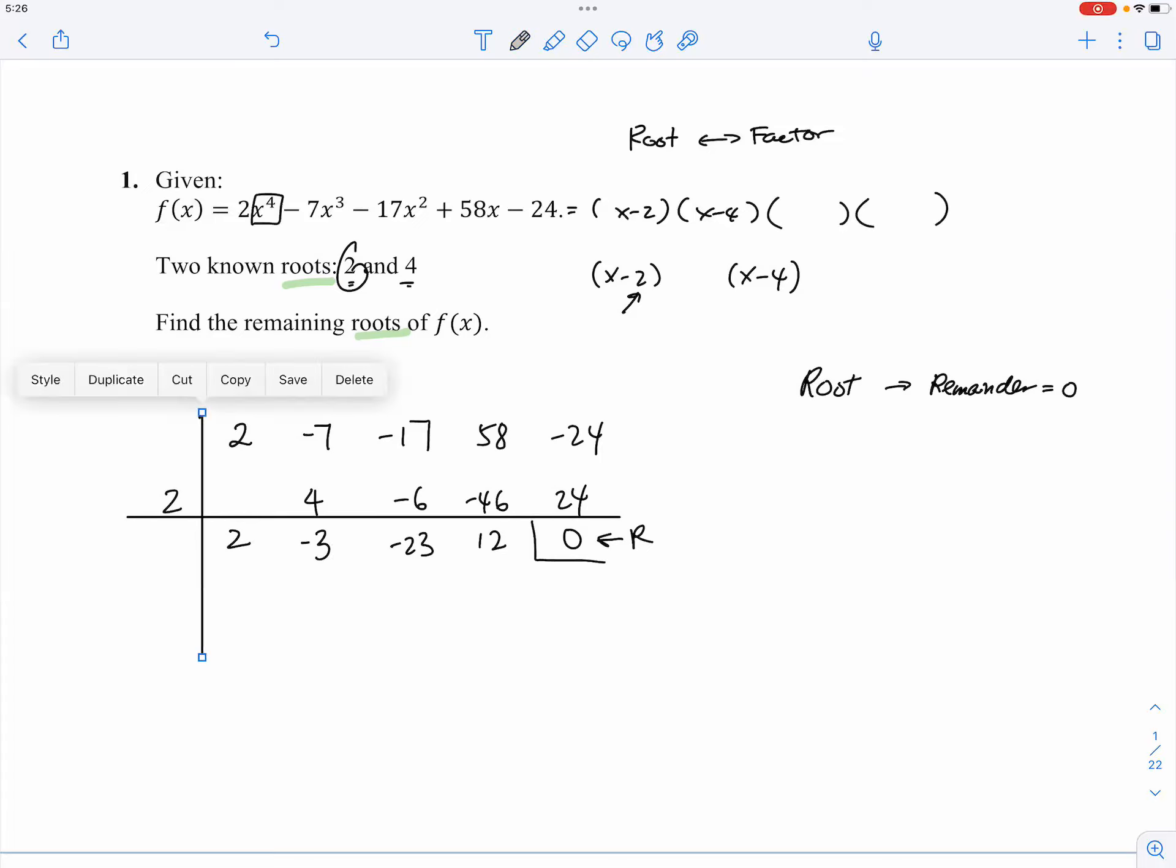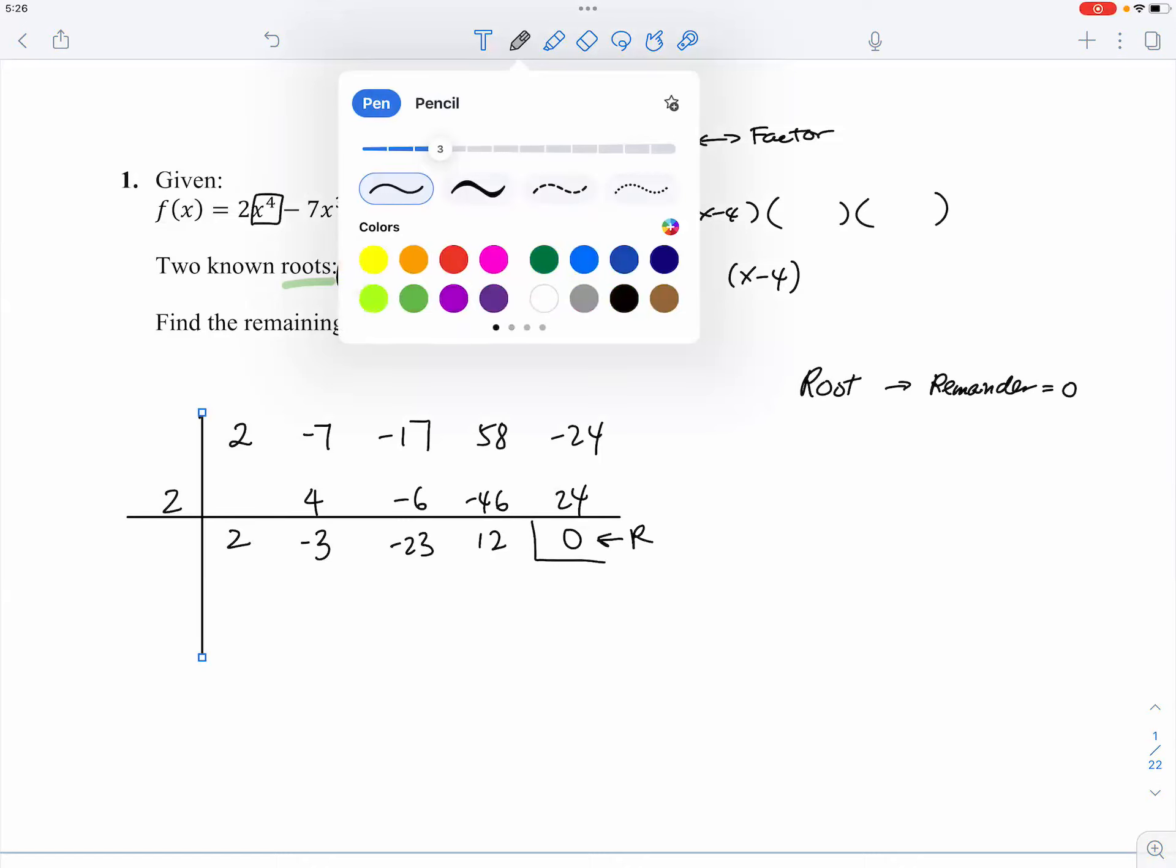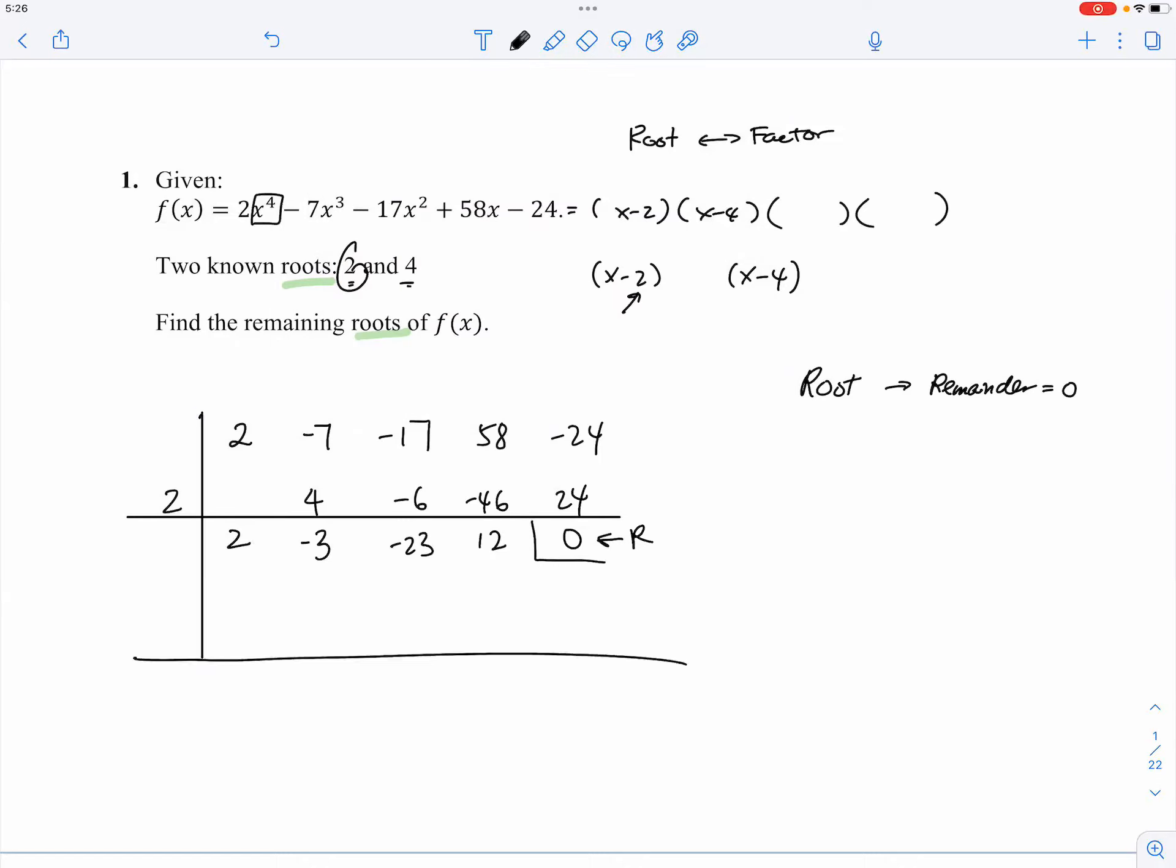Because now that we divide it once, we go from quartic, which is to the fourth power, to cubic. So, if we can divide one more time, then we should have a quadratic equation. And if we have a quadratic equation, we probably would be able to factor it easily. So, in this case, we'll divide by 4.